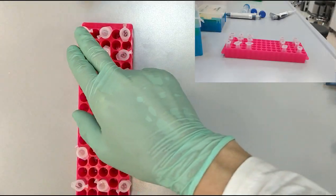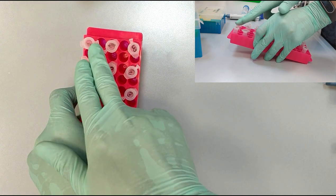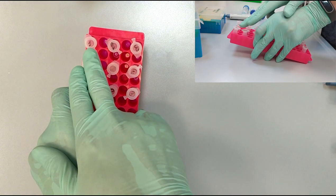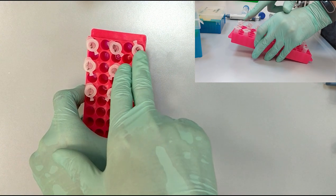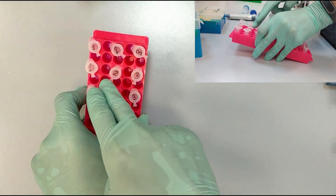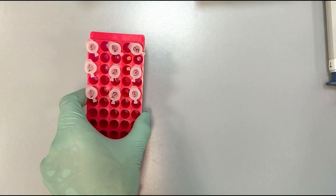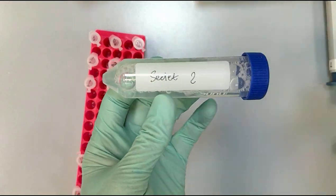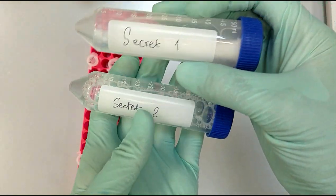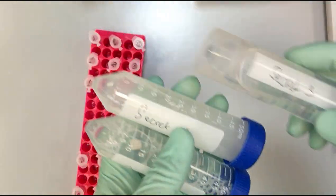We have three sets of eppendorf tubes for secret solution 1, secret solution 2, and secret solution 3. We have three sets, and we are going to transfer one milliliter of these secret solutions to the corresponding eppendorf tubes.